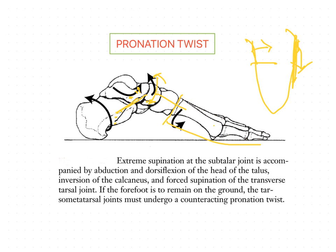Subtalar supination results in calcaneal inversion with dorsiflexion and abduction of the talus. As mentioned, the transverse tarsal joint will have little if any ability to pronate, since the navicular and cuboid bones are carried along with the hindfoot motion. So the first and second rays will plantar flex and evert, whereas the fourth and fifth rays will dorsiflex, resulting in a pronation twist of the tarsometatarsal joints to adjust the forefoot.